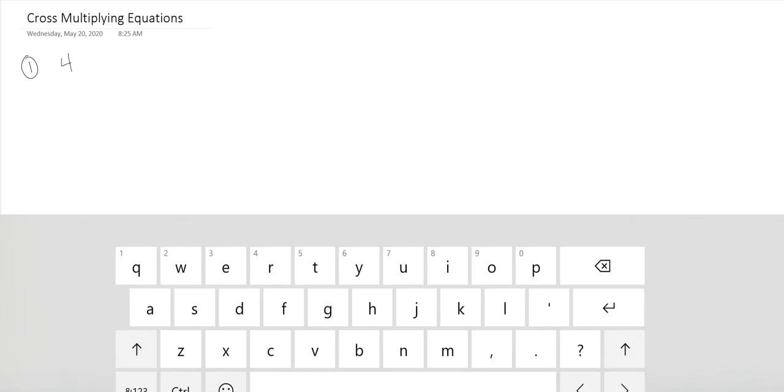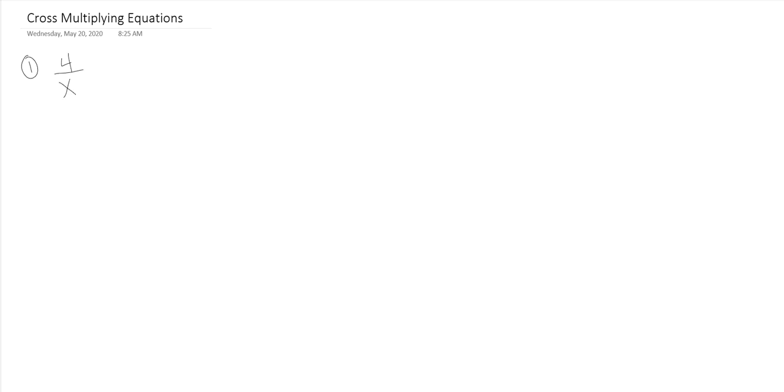We have 4 over X is equal to 2 over 7. So you always cross multiply anytime you have two fractions that are equal to each other with a variable somewhere in there. You can have multiple variables but that's whenever you cross multiply. So whenever you cross multiply you multiply across from each other so those two will be multiplied together.